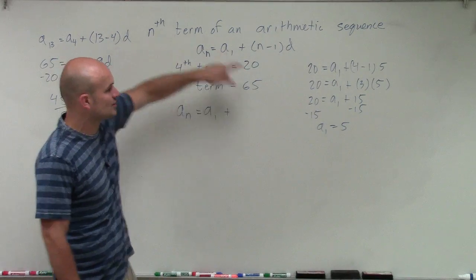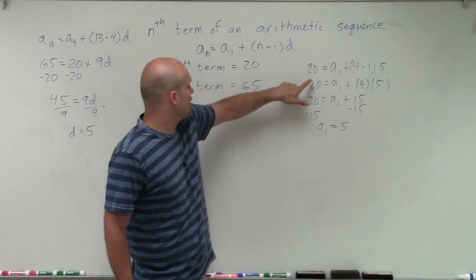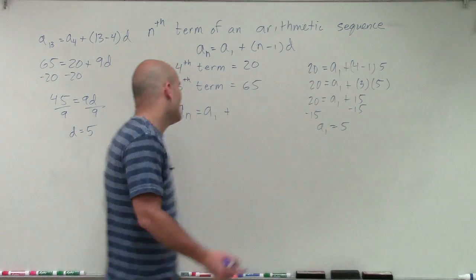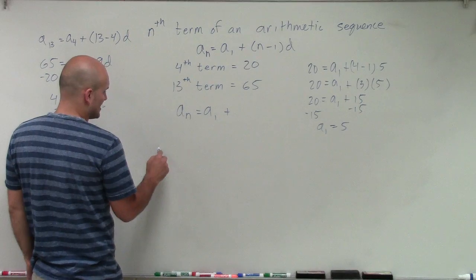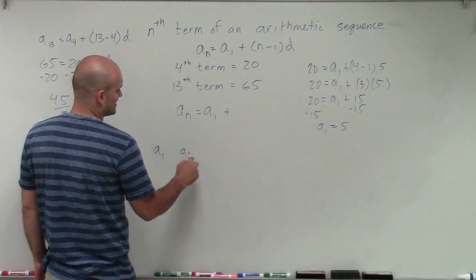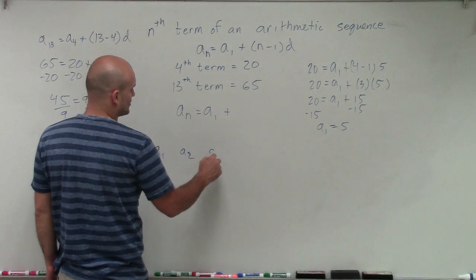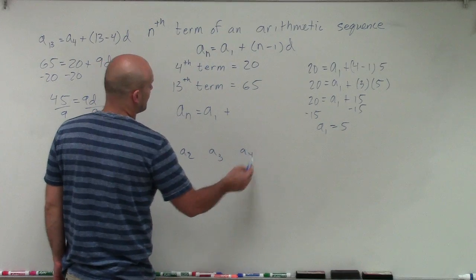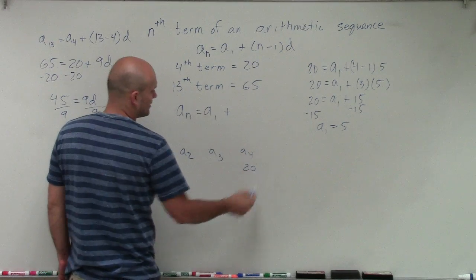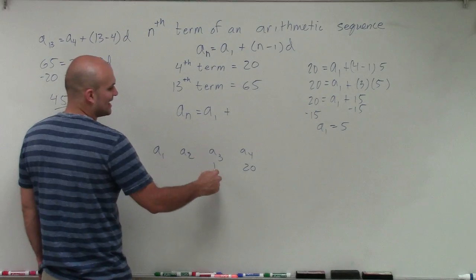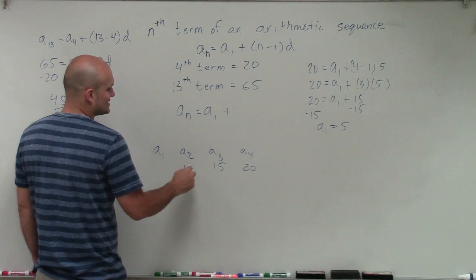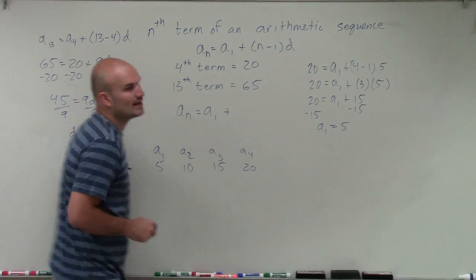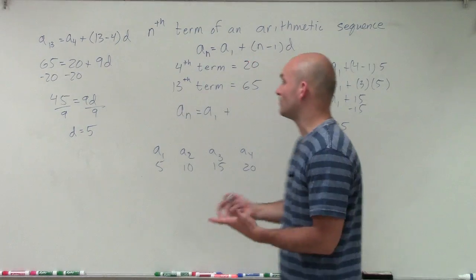You could do the same thing for the 13th term, instead of using the 13th term, use 65 here and 13 over there. However, we could also just look at this and say, all right, well, if I know a sub 1, a sub 2, a sub 3, a sub 4, well a sub 4 is 20, and I know the difference is 5, then a sub 3 has to be 15, a sub 2 has to be 10, and a sub 1 equals 5. So you can work it either way.